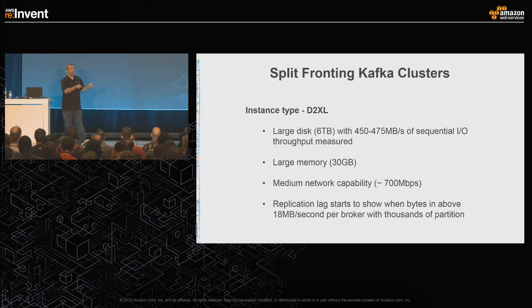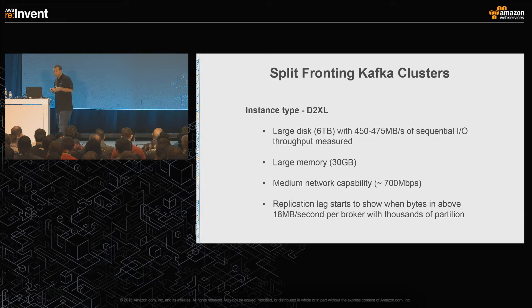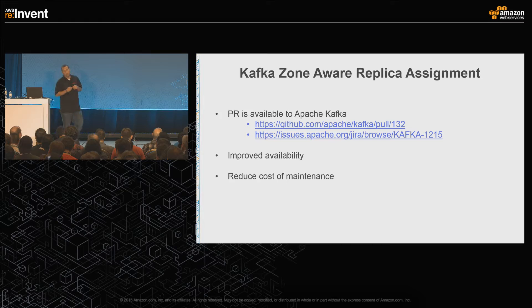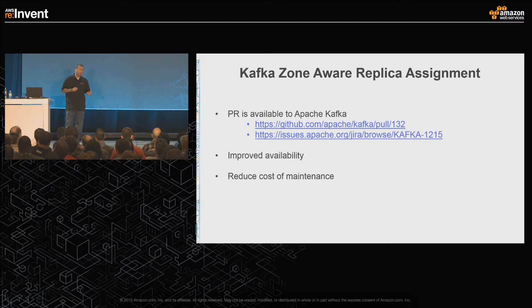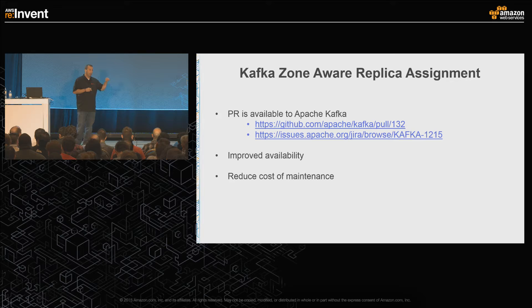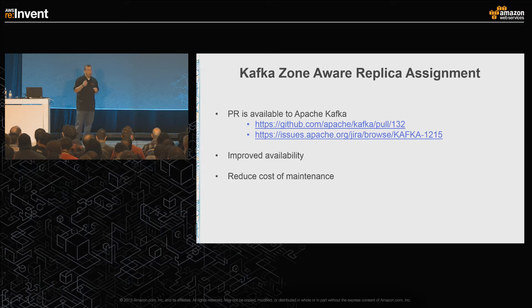Our current footprint is about 1,500 brokers spread across three regions — that's the fronting Kafka piece. One of the things we've done is zone-aware replica assignment. This is currently an internal version; we have a pull request and recently submitted an architecture doc as well. There are a couple benefits: we're in multiple AZs, so from an availability perspective, if we lose an AZ we're still okay. It also lets us survive losing a physical host with multiple Kafka instances. An added benefit is around maintenance — prior to this, when we did upgrades we had to go node by node. Now, when we need to do maintenance or upgrades, we can do it at the AZ level: take out an AZ, upgrade, throw it back in.